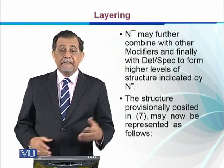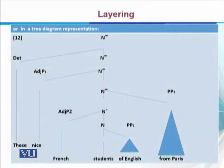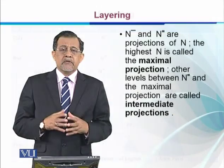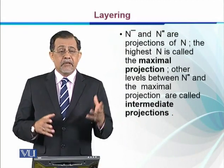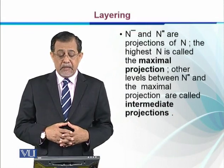For example, we have 'student,' which is a noun, and we have a noun phrase. 'Of English' is the first post-modifier — a complement-like modifier of the noun. Moving up through different layers, we reach N-double-bar. So N-bar-one and N-bar-two are projections of N, and the highest N is called the maximal projection.